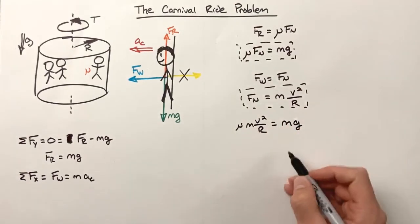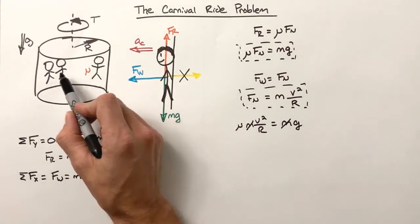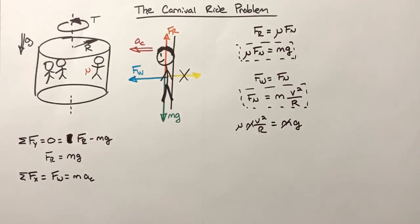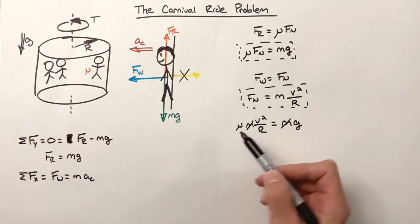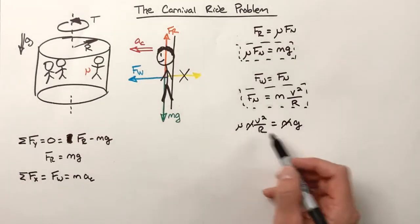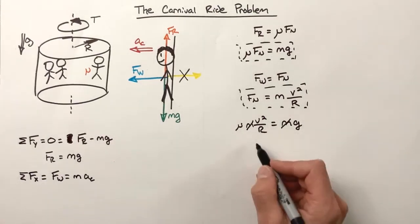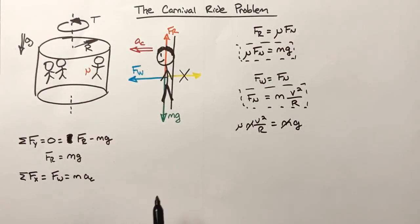Right away we see the masses cancel out, which is great — otherwise you'd have to weigh everybody before they got on the ride. So it's a good thing mass cancels and everybody gets to ride together. But there's still a v floating around in the solution. The velocity of the people wasn't given to us in the problem, so we need to handle that.